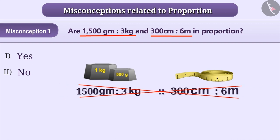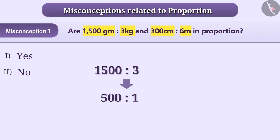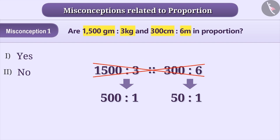Similarly, some students simply ignore the units. They simplify the ratios as 1500 is to 3, equal to 500 is to 1, and 300 is to 6, equal to 50 is to 1. They think that ratios 1500 is to 3 and 300 is to 6 are not in proportion. Because of these two misconceptions, students choose option 2 as the answer, which is incorrect.